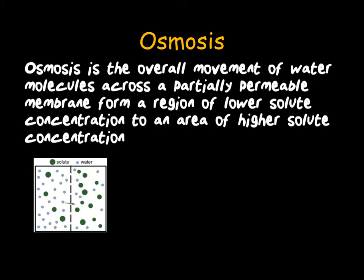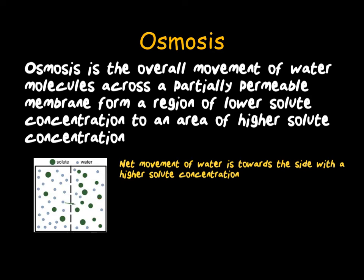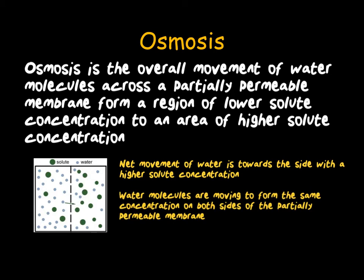In this diagram, we have a much higher solute concentration on the right-hand side. As such, the net movement of water is going to be from the left-hand side to the right-hand side. Water molecules are actually passing both ways because they move randomly; however, the overall net flow would be from the left to the right, because water molecules are moving towards that higher solute concentration. This means the solute concentration gets more dilute on the right-hand side and less dilute on the left — effectively, the water is trying to get the same concentration on both sides. Once the concentration is the same on both sides, water movement will continue but there will be no overall net change.